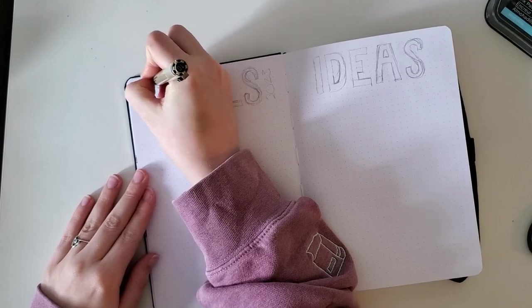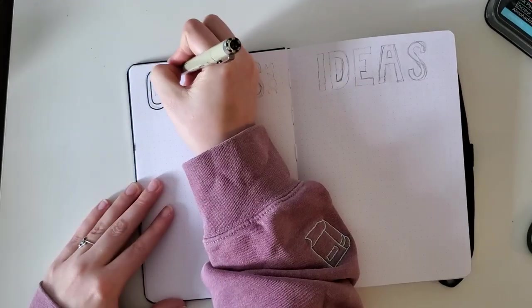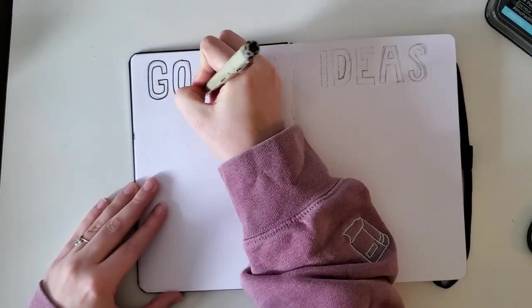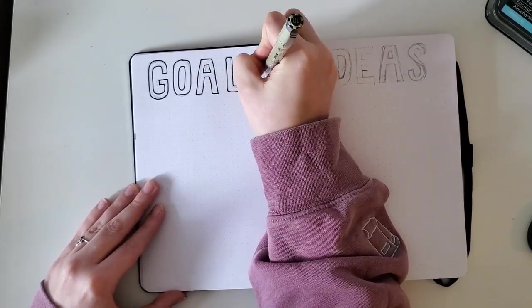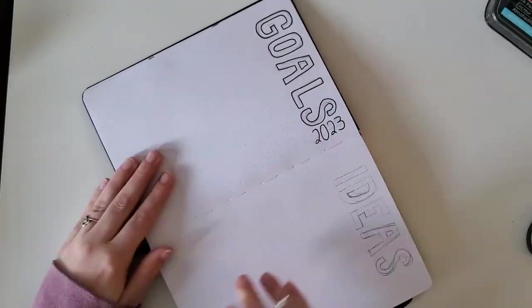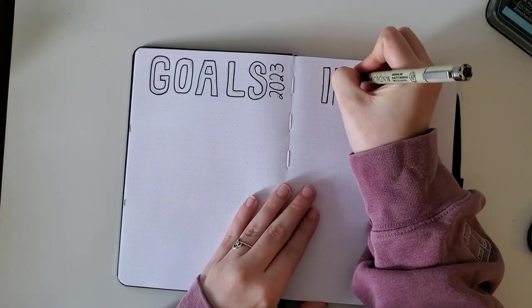Now we're moving on to my goals and ideas spreads. Super simple. Just wrote goals and ideas in big block letters at the top, and then I'm going to write them all underneath on these pages.